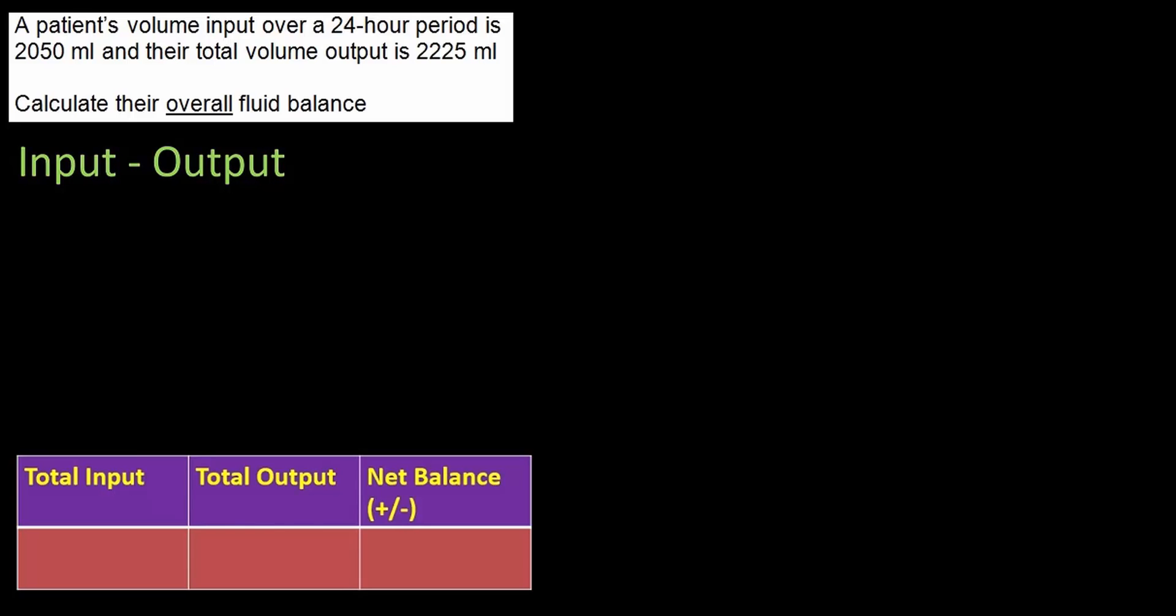Patient's volume input over a 24 hour period is 2,050 millilitres and their total volume output is 2,225 millilitres. Calculate their overall fluid balance. So there is my fluid balance formula. Let me fill in some of the values in my table. Input is 2,050 millilitres. Output is 2,225 millilitres. What sign should I have in that net balance? Absolutely right. A negative. So it's going to be negative.